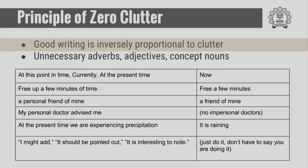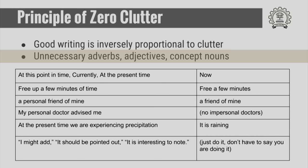A second principle is zero clutter. Good writing is inversely proportional to clutter. Do not use unnecessary adverbs, adjectives, and concept nouns. For example: 'at this point of time,' 'currently,' 'at the present time' — essentially all mean 'now.' 'Free up a few minutes of time' — just say 'free a few minutes.' 'A personal friend of mine' — what friend is not personal? Just say 'friend.' 'My personal doctor' — are there impersonal doctors? Just say 'doctor.' And phrases like 'I might add,' 'it should be pointed out,' 'it is interesting to note' — all superfluous. Just state it. If it is interesting, the reader will find out.